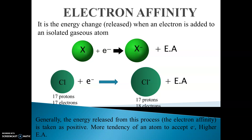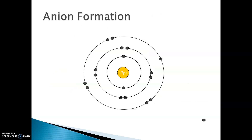So the more the tendency of an atom to accept an electron, the higher will be the electron affinity. Now let's see how an ion is formed. This is an example of a chlorine atom having 7 valence electrons in its outermost shell, and it has one electron less than its nearest noble gas configuration.